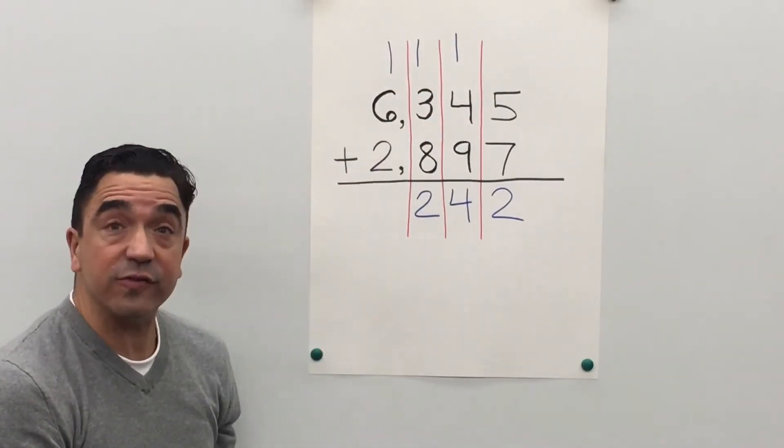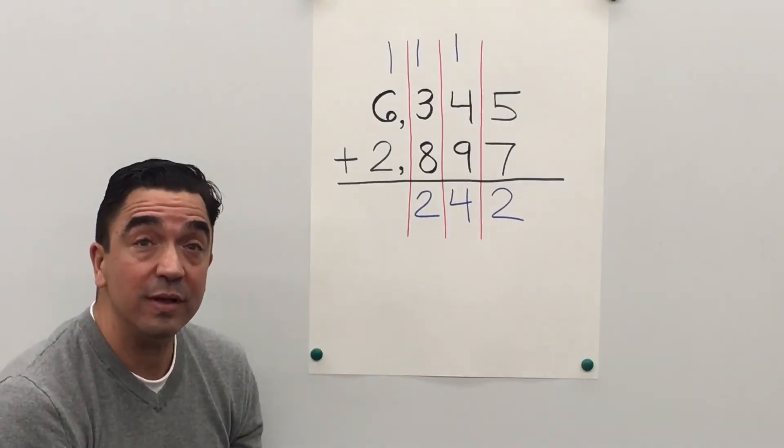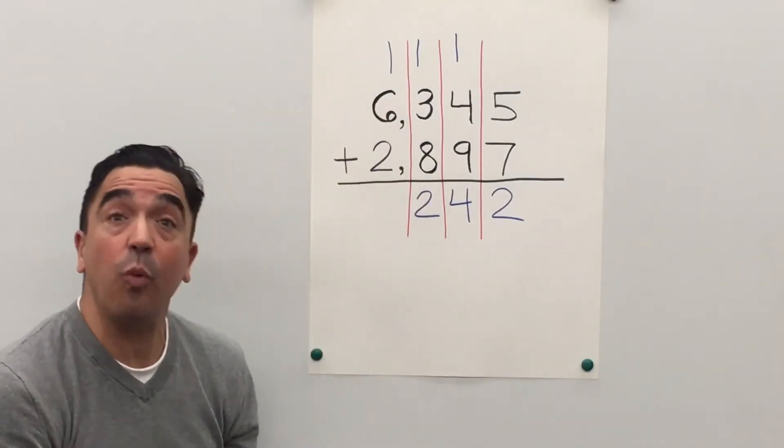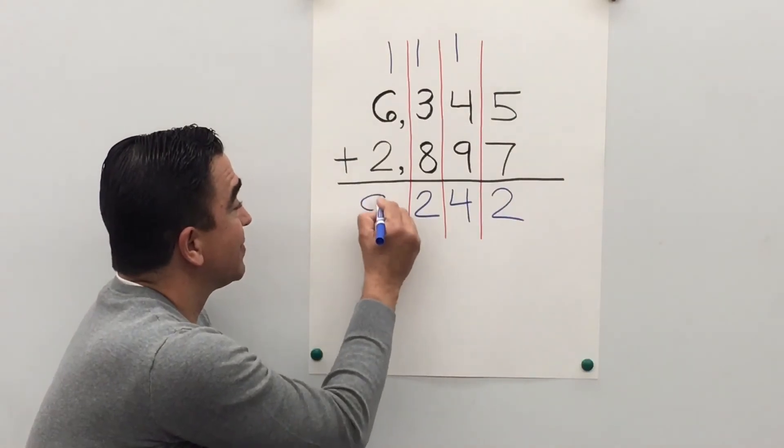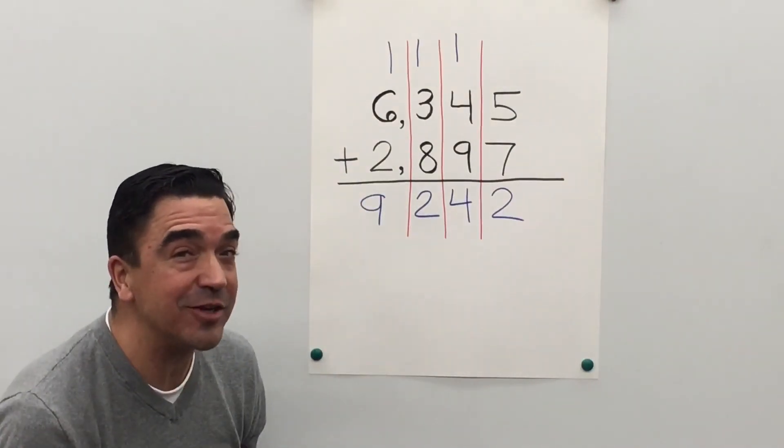6 plus 2 is 8, plus 1 is 9. Don't forget your comma.